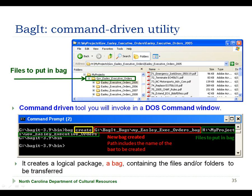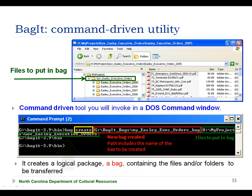In the example, we are going to put all of the files in the bag that are in the gov_easily_executive_orders folder. Notice file names do not have any special characters like asterisk or ampersand, and we have used the underscore as a space holder between words to aid in the readability of the file.